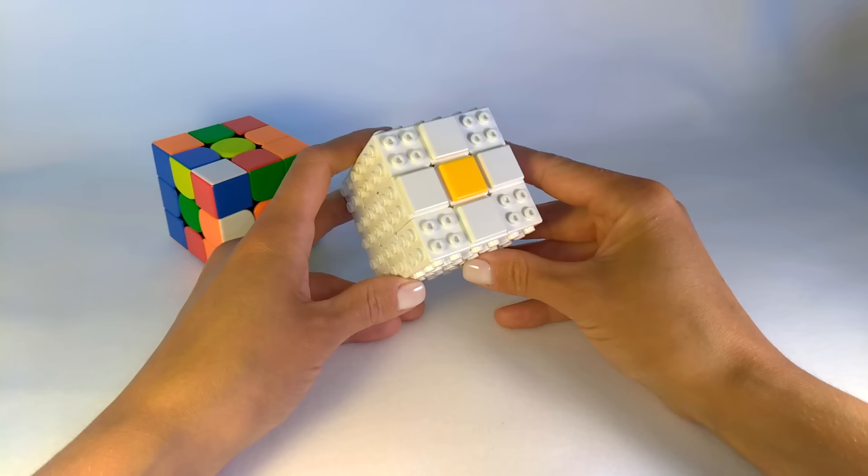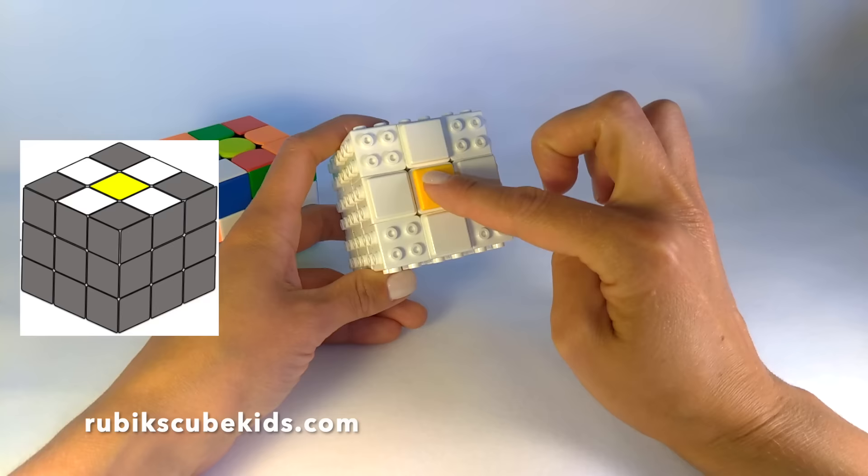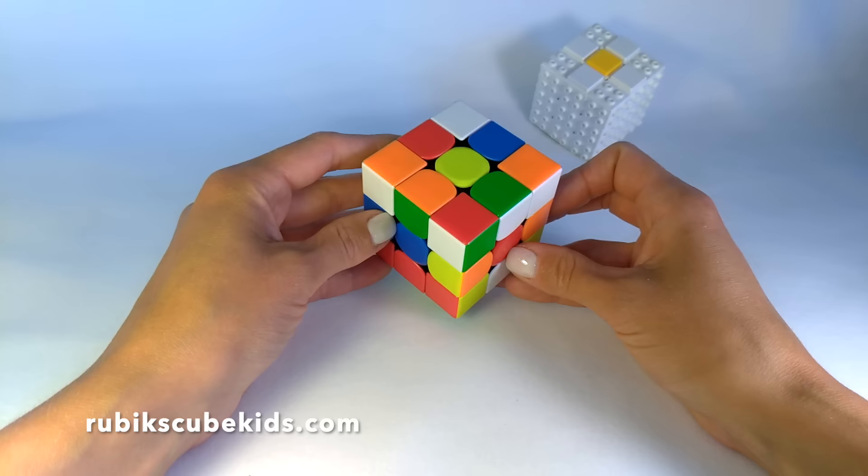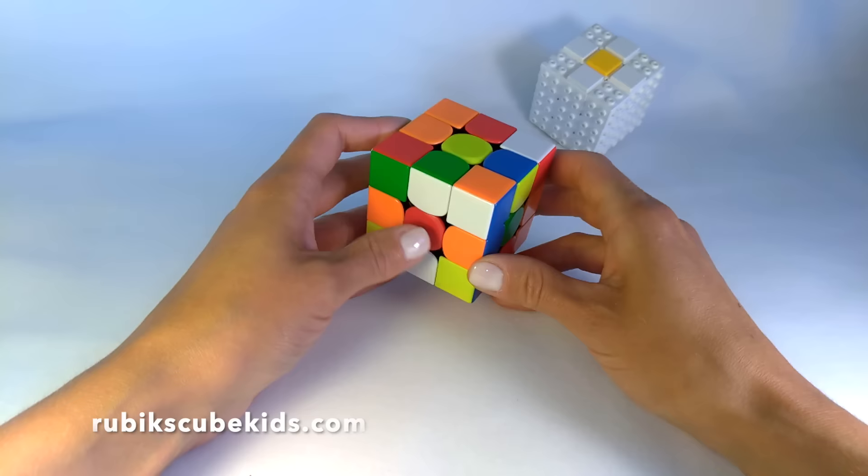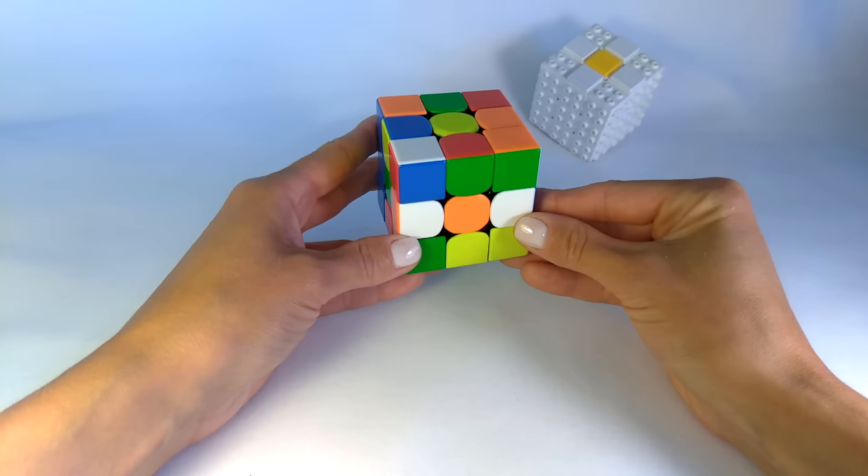The first step will be solving a daisy. The first step is called a daisy because daisy has a yellow center and white petals. Really, looks like a daisy. Take the cube so that the yellow center is on the top. Turn the cube as shown. Look for edges with white color. Remember, the edges have two colors. At this step could be three possible situations.